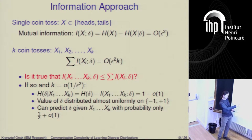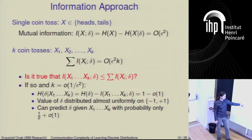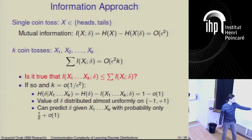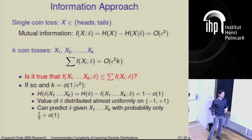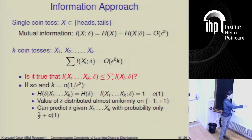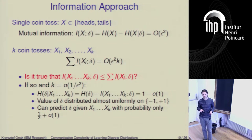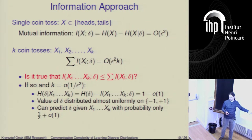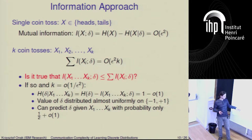Why is this important? If the mutual information is subconstant, then the entropy of delta given all those coin tosses is going to be 1 minus something subconstant. This means that delta, even given our knowledge about all those coin tosses, is going to be almost uniformly distributed on {-1, +1}. So an algorithm that takes this knowledge cannot predict what delta is given the coin tosses with probability significantly larger than one half.